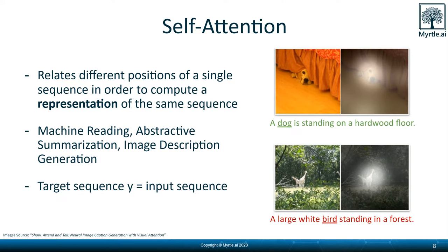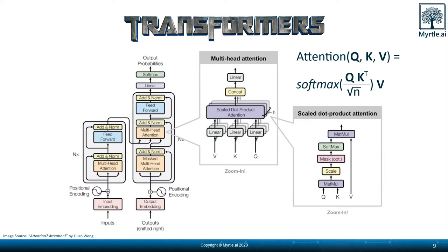Now I can talk about transformers. Just as E=mc² is one of the most famous equations in modern physics, the scaled dot-product attention equation is the core of transformers. Comparing to neural machine translation: the key-value pairs K and V matrices are the encoder hidden states, while the query Q represents the previous output. The output is a weighted sum of the values V, where the weight assigned to each value is determined by the dot product of the query with all keys.